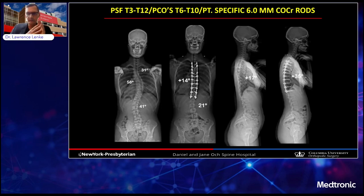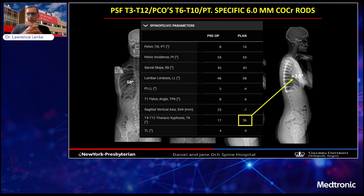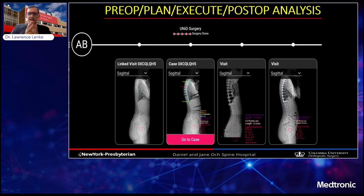Here are the pre- and post-op radiographs in the coronal and sagittal plane. In the coronal plane, I corrected to achieve a nice spontaneous correction of the unfused lumbar curve below. In the sagittal plane, I corrected from 17 degrees to 35 degrees of thoracic kyphosis — my plan was 36 degrees, so pretty close within measurement error. Here's a composite of the pre-op, planned, intra-op, and post-op alignment in this patient — a chronological summary of how this is all planned and provided through the concierge service.